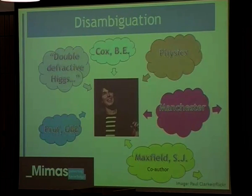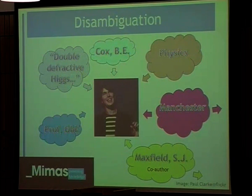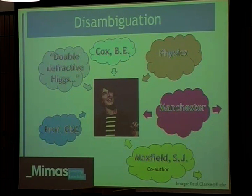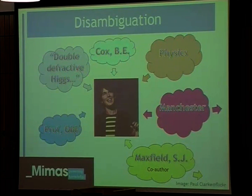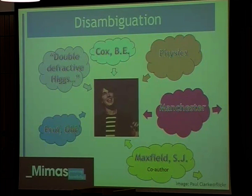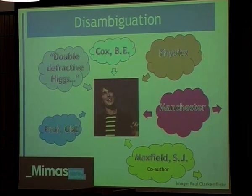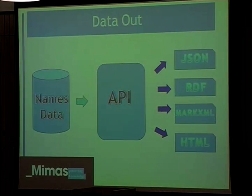To give a famous example, we've got Brian Cox and he might appear in all of those sources but may be referenced with a different name form. But we can see there's other information in there that we can use to help match them across those data sources — things like fields of interest, institution, and collaborative relationships. We can use all that information and pull it together to form our own records.